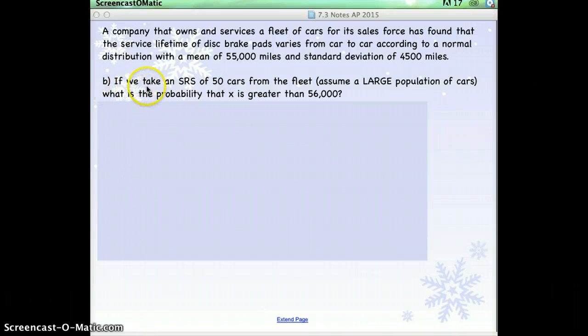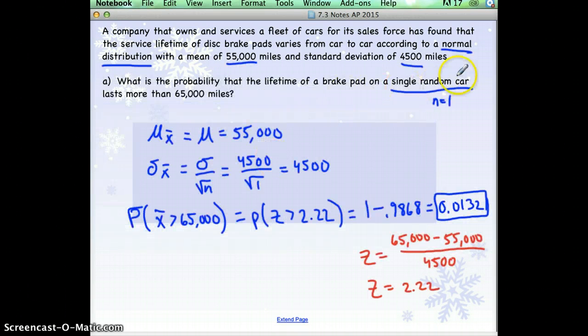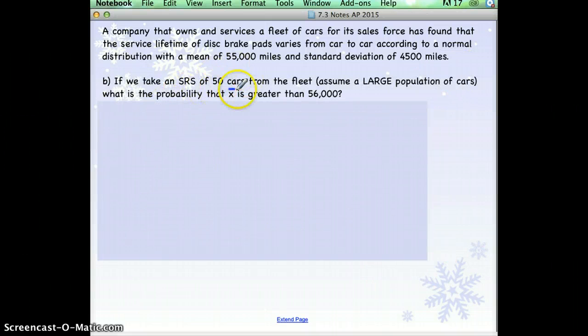Now the question says, if we take a simple random sample of 50 cars from the fleet, what's the probability that x bar is greater than 56,000? The last problem we did was a single car. Now we're talking about a simple random sample of 50 cars. So that is the value of n. n is 50 now.